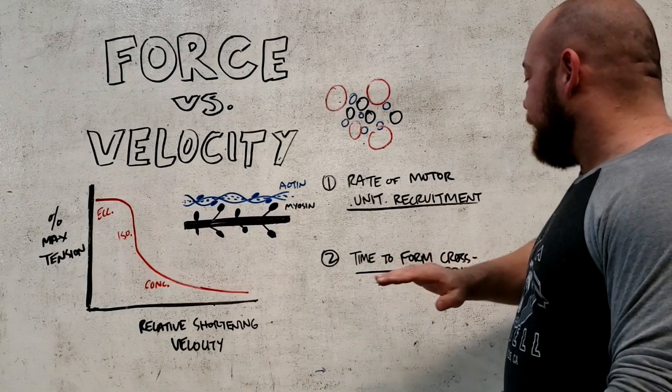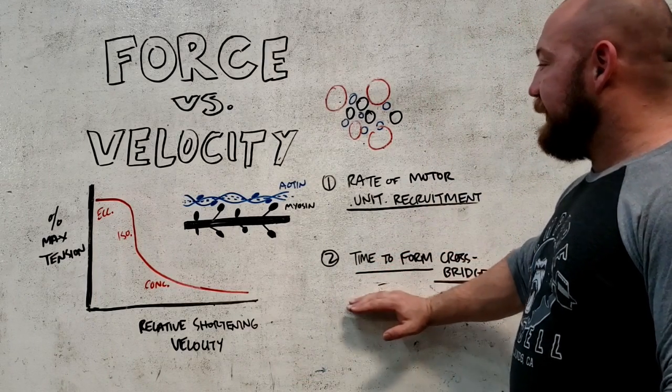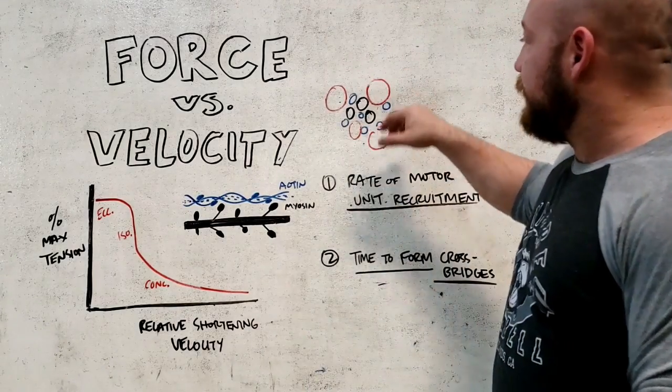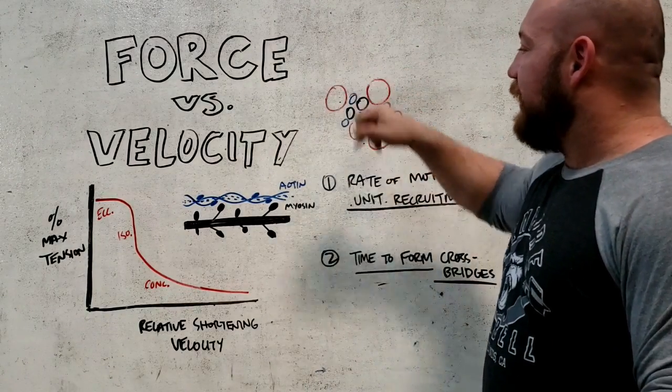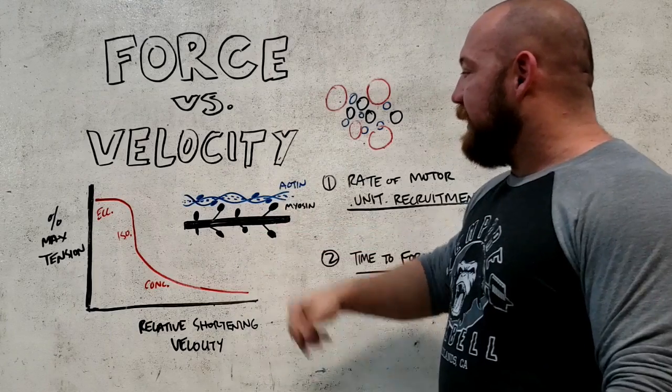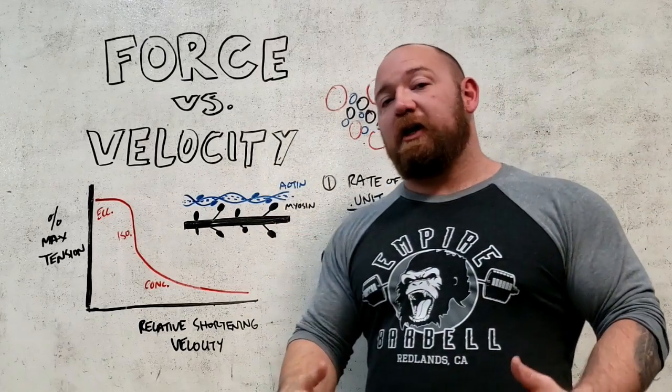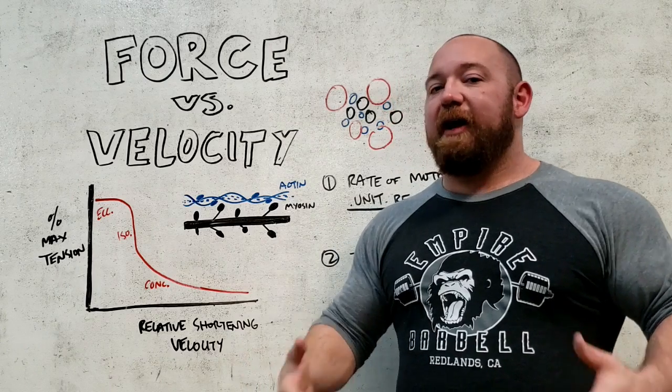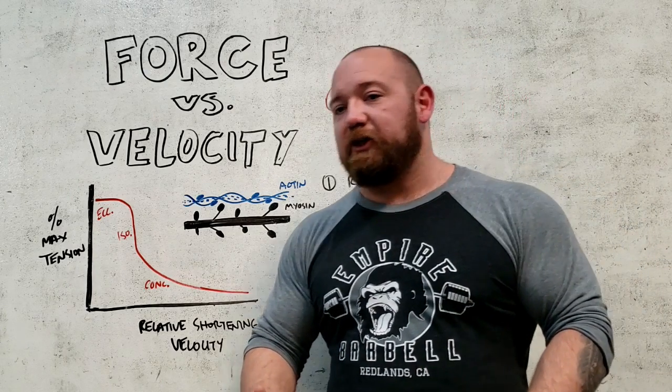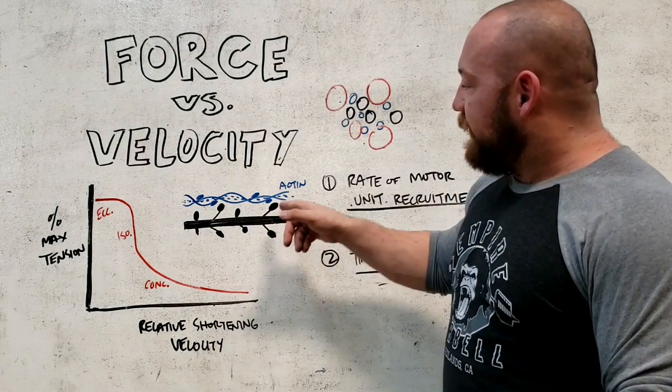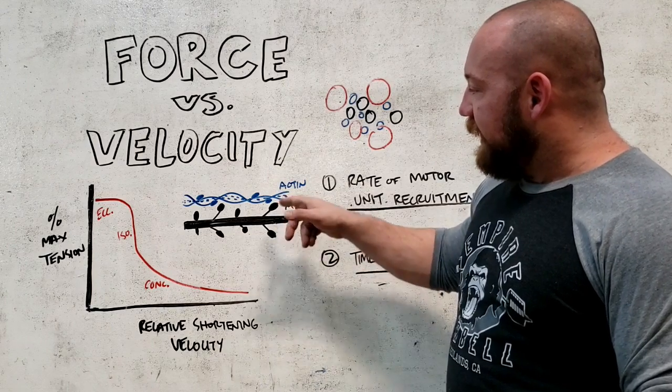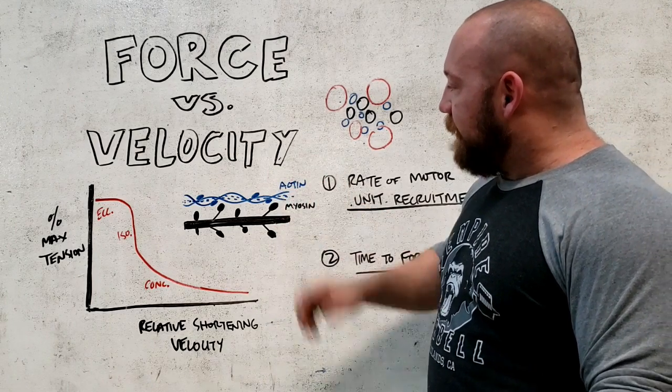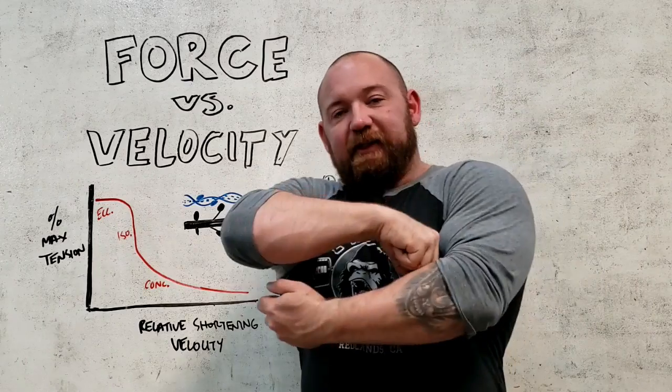Now, the thing I want to talk about today is the time it takes to form cross bridges. So now, instead of talking about motor units, we're going to go inside each cell and look at the myosin and actin filaments, which are actually causing the contraction. Every time an ATP reaction goes off - ATP is a substrate that causes muscle fibers to contract - what you're getting are these little heads on the myosin filament. We're getting the myosin to grab onto the actin and to pull and slide.